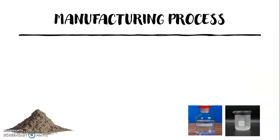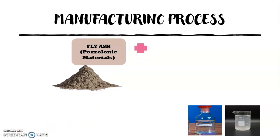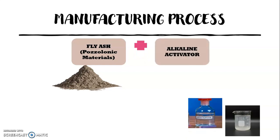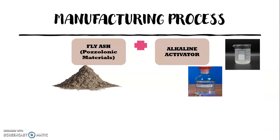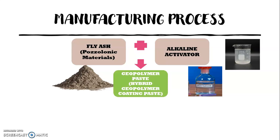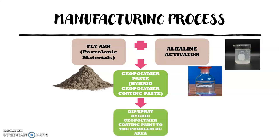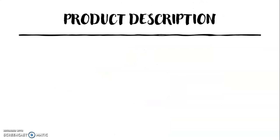For the manufacturing process, HGC is made by mixing pozzolanic materials such as fly ash with an alkaline activator, which consists of sodium hydroxide solution and sodium silicate solution. The alkaline activator is prepared and mixed together 24 hours prior to use so it becomes more homogeneous. After mixing the fly ash and alkaline activator, the geopolymer paste HGC is produced and simply applied to the problem reinforced concrete area.